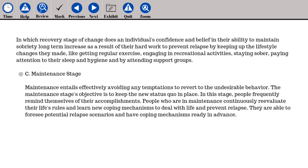The answer is C. Maintenance stage. Maintenance entails effectively avoiding any temptations to revert to undesirable behavior. The objective of the maintenance stage is to keep the new status quo in place. In this stage, people frequently remind themselves of their accomplishments. People in maintenance continuously re-evaluate their life's rules and learn new coping mechanisms to deal with life and prevent relapse. They are able to foresee potential relapse scenarios and have coping mechanisms ready in advance.